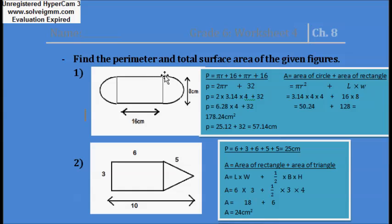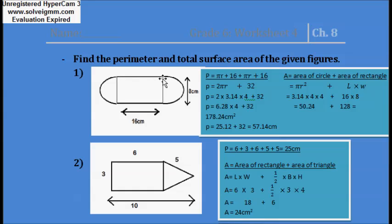Starting from here, first you will add the perimeter — the circumference of this semicircle — then plus the length of this rectangle, then again the perimeter of this half circle, and then again the length of this rectangle. So your formula will become: perimeter equals pi·r plus 16 plus pi·r plus 16.